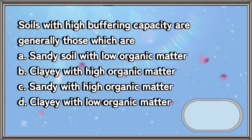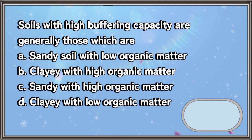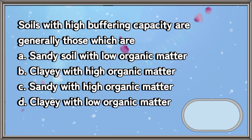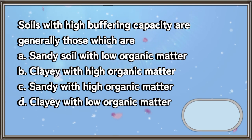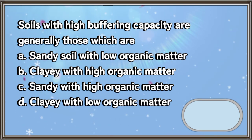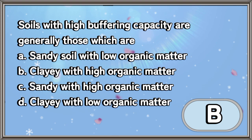Soils with high buffering capacity are generally those which are: A. Sandy soil with low organic matter, B. Clayey with high organic matter, C. Sandy with high organic matter, D. Clayey with low organic matter. The answer is letter B.